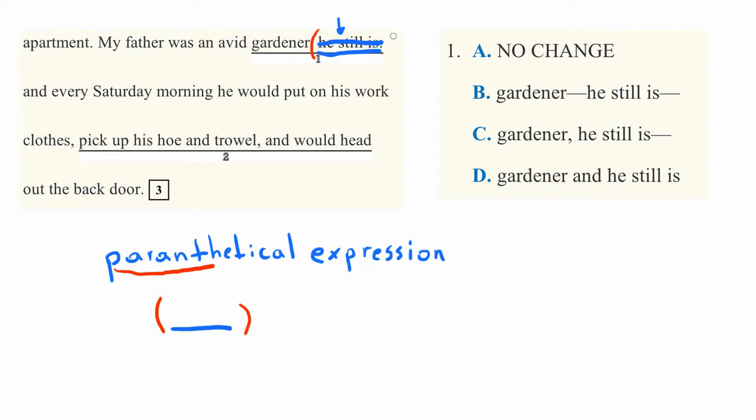So around he still is, I could put parentheses, which would indicate that that part of the sentence is not necessary and can be removed. It's just extra information.